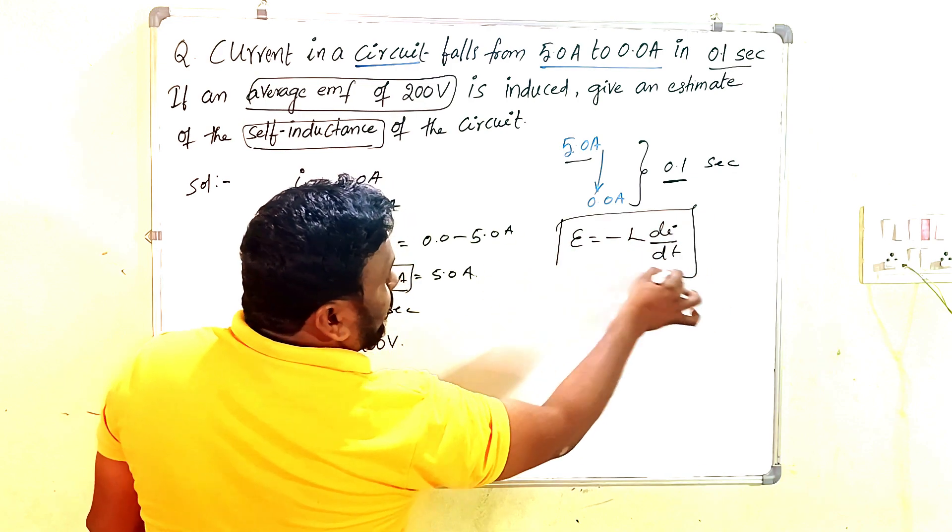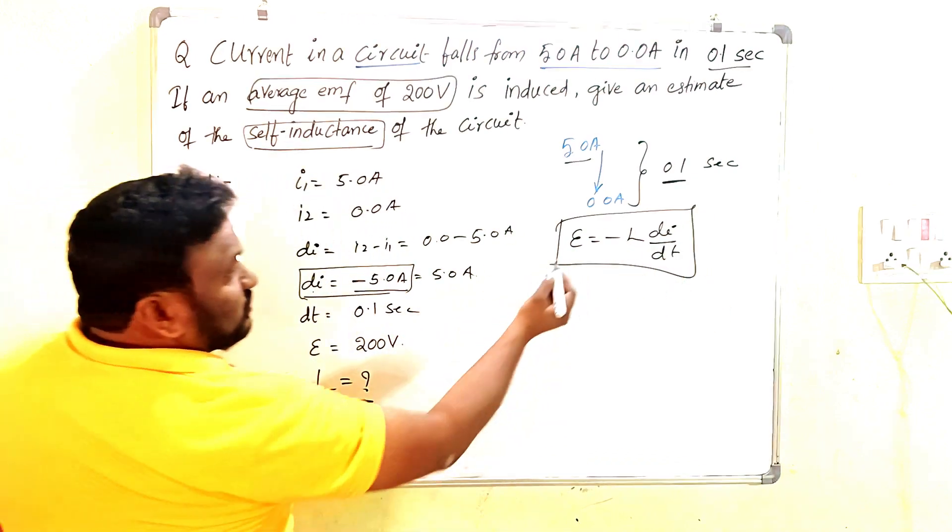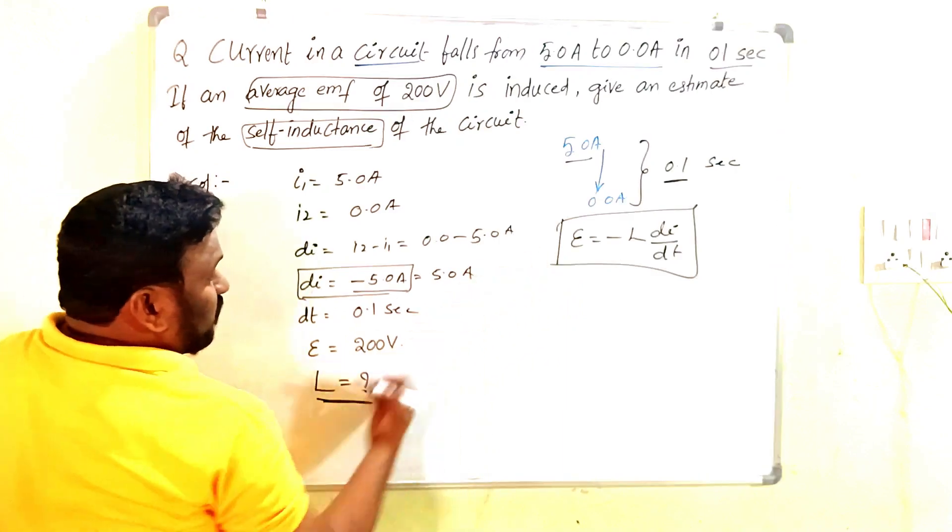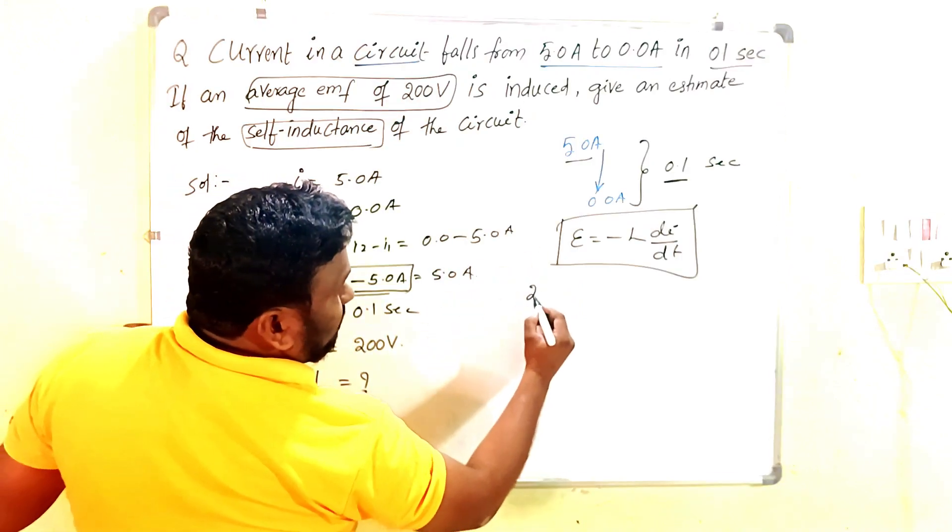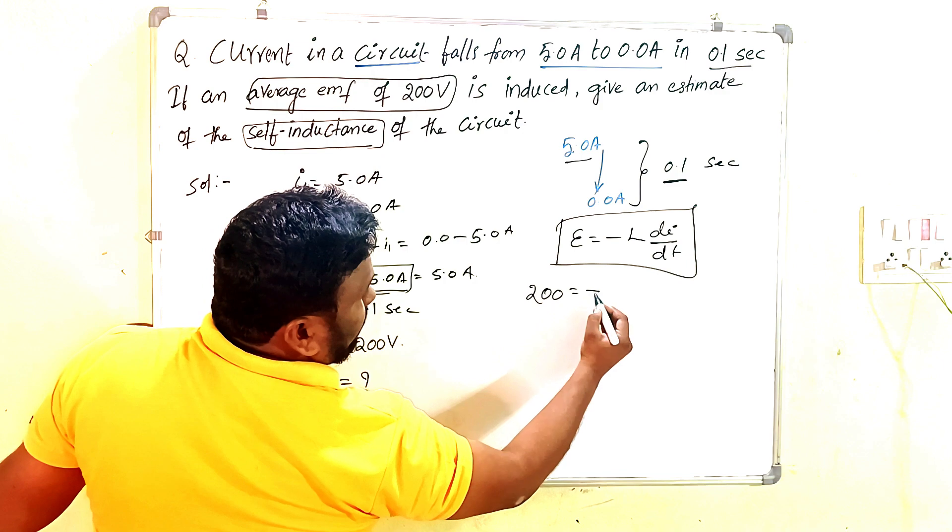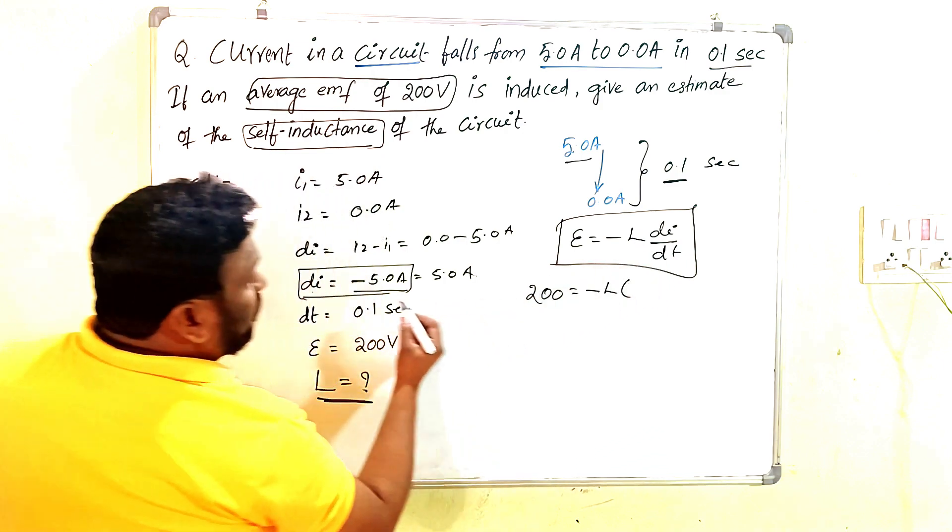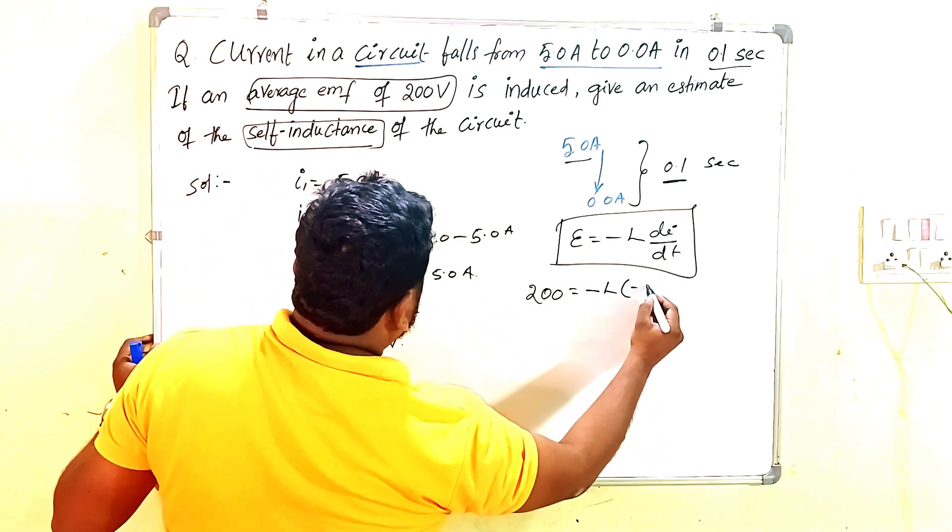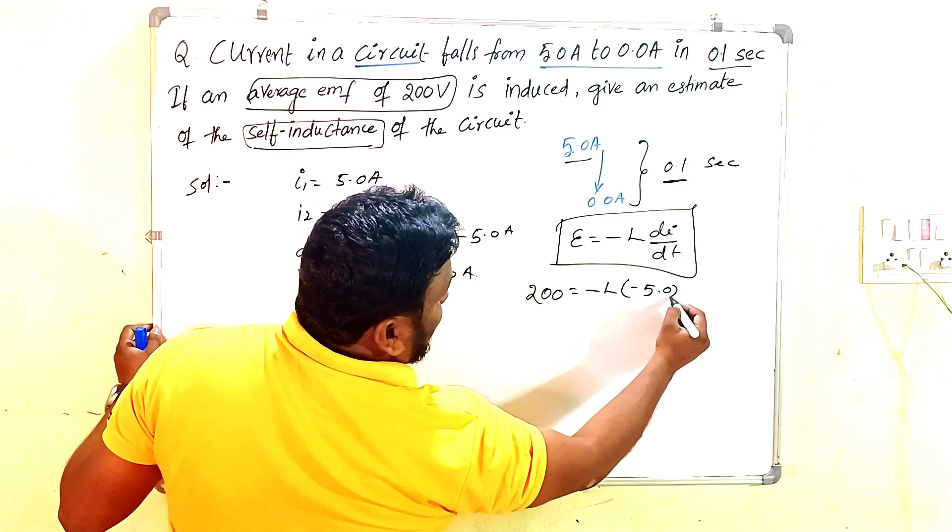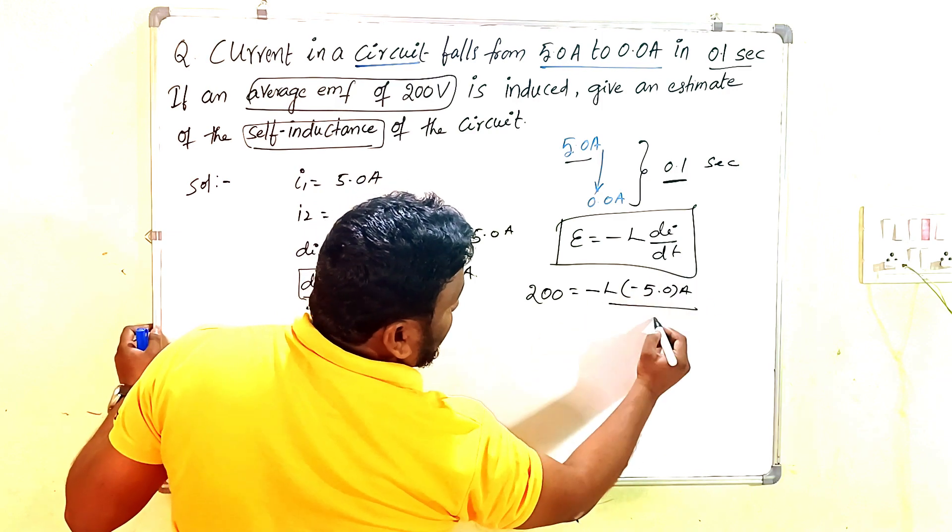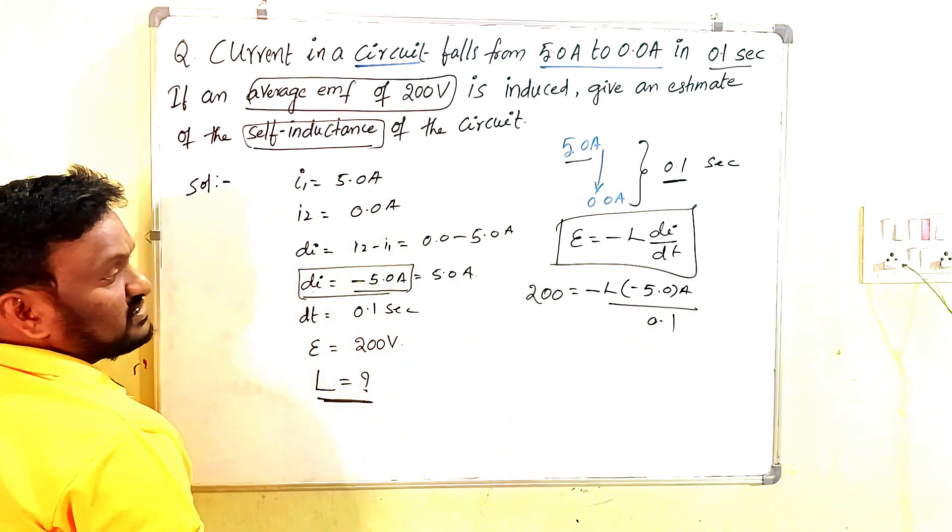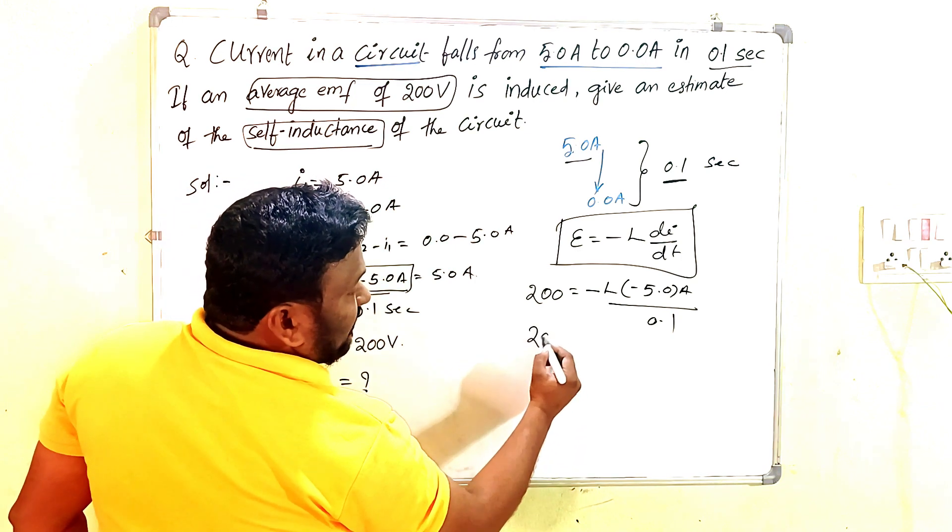Substitute the values. Epsilon is 200, so 200 = -L × (-5.0 amperes) / 0.1. This gives 200 = L × 5.0 / 0.1.